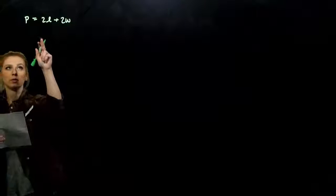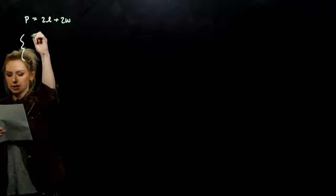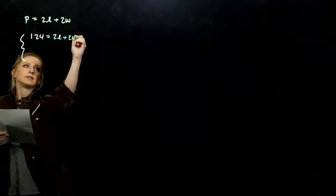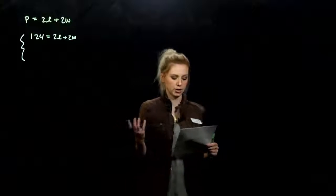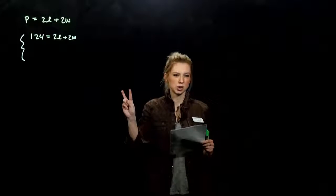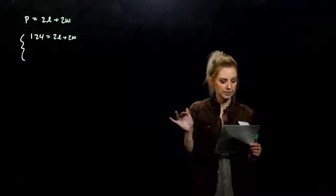So I know the perimeter. I know this one piece of information. So in my system I know that P is 124 and that is 2 times the length plus 2 times the width since we know the perimeter is 124 feet. But we only have one equation, 2 unknowns. So we need some more information. The second line gives us that.